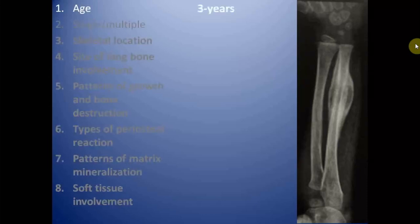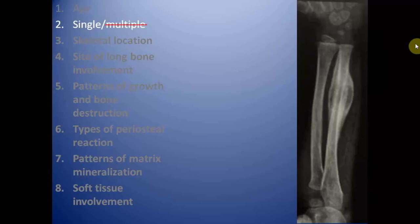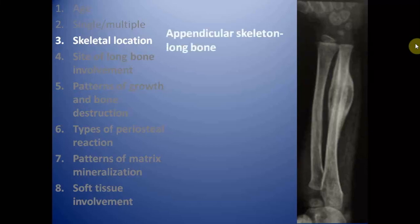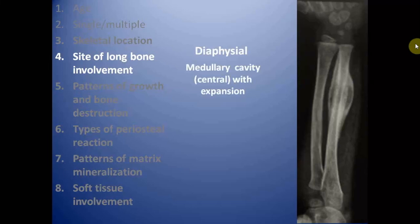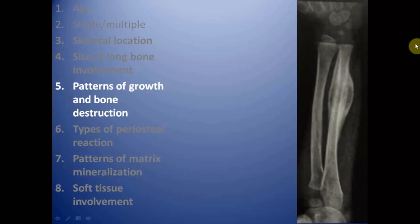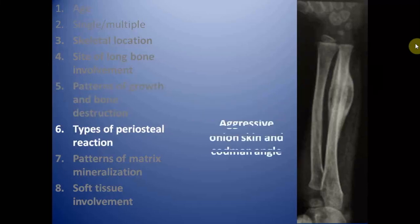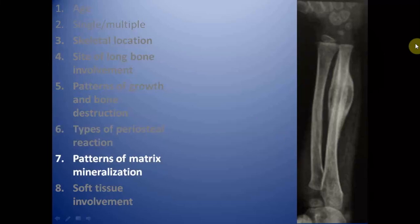Age of the patient is 3 years — a young child. The lesion is single, involving the ulna. Skeletal location is appendicular skeleton, involving a long bone. The lesion involves the diaphysis of the ulna, involving the medullary cavity, and is predominantly central with expansion. The pattern of bone destruction is permeative with a wide zone of transition. The periosteal reaction is aggressive — onion skin and Codman's triangle type. There is no obvious osseous or chondroid matrix. Soft tissue involvement is present in the forearm.